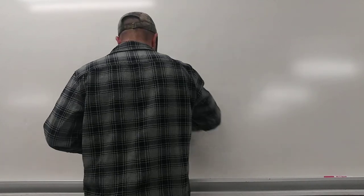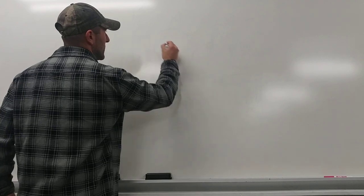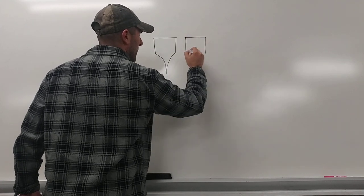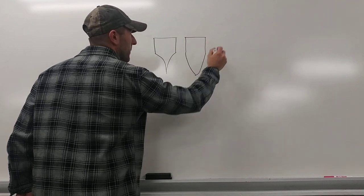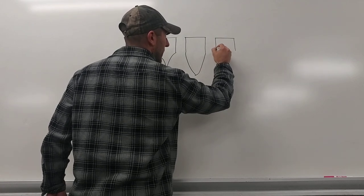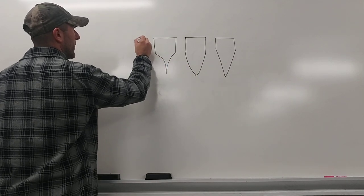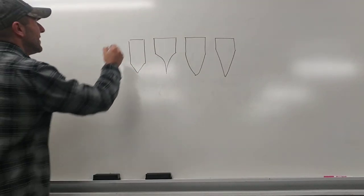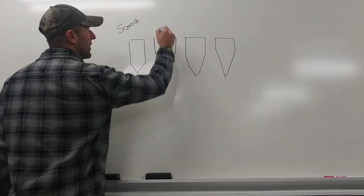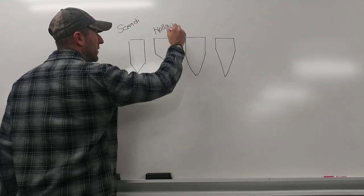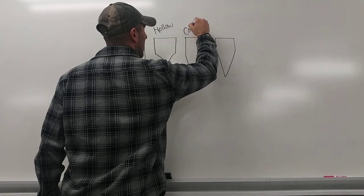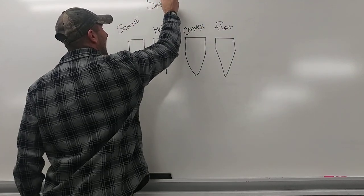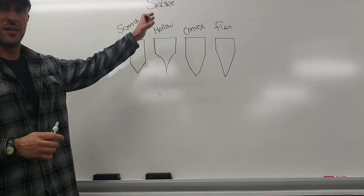Now staying with the Sabre grind, as we said, we have the hollow, we have the convex, we have the flat, and I'm going to come back over here for this—we have the Scandinavian ground knife, right? And I'll just notate that. So these are all Sabre grinds.